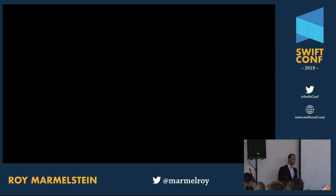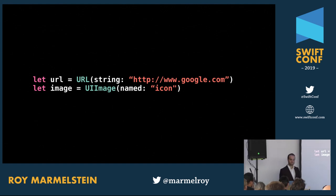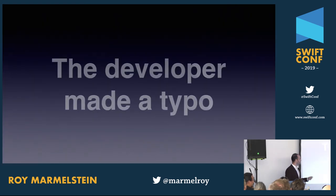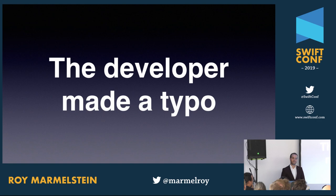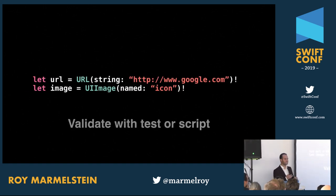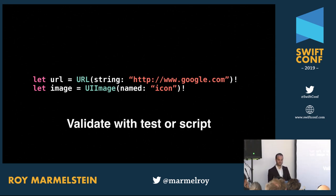Another issue is that UIKit has a lot of failable initializers. URL(string:) returns an optional, UIImage as well. These will be nil when you've made a typo during development. If you made a typo, you want to know about it as quickly as possible before it reaches production. My recommendation is to also force unwrap there, but make sure you have tests that touch that path so you get a fast feedback loop. An alternative would be to use SwiftGen and get type-safe enums.